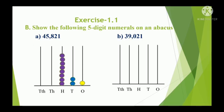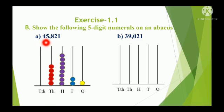In the 1,000s place, the digit is 5, so draw 5 beads: 1, 2, 3, 4, 5. In the 10,000s place, the digit is 4, so draw 4 beads: 1, 2, 3, 4.